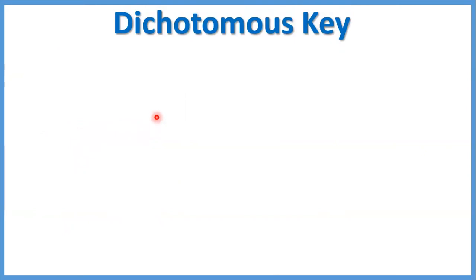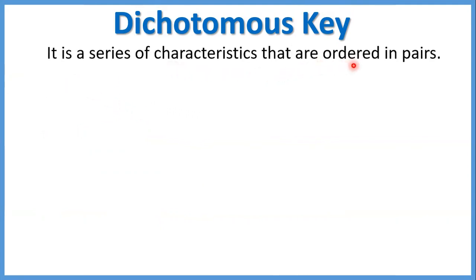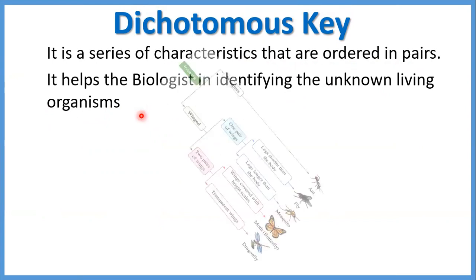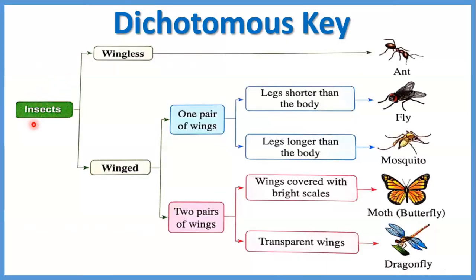Dichotomous key — دي برضو طريقة تانية علشان نعمل identification للliving organisms. It is a series of characteristics that are ordered in pairs — مجموعة من characteristics إحنا بنرتبها in pairs. It helps the biologist in identifying the unknown living organism. مثلاً لو بنتكلم على الinsects، قسمناهم لorder of pairs: wingless أو winged. لو wingless يبقى عندنا الants. لو winged عندها wings، نعمل لها برضو order in pairs: one pair of wings أو two pairs of wings.